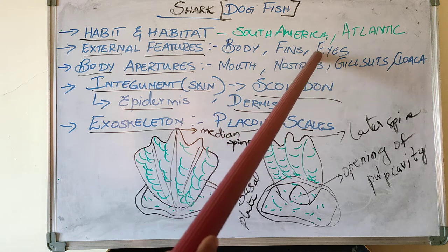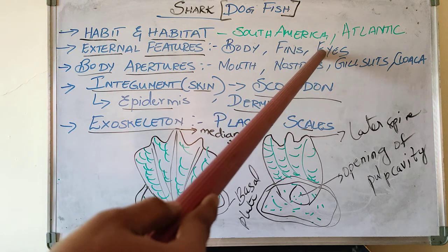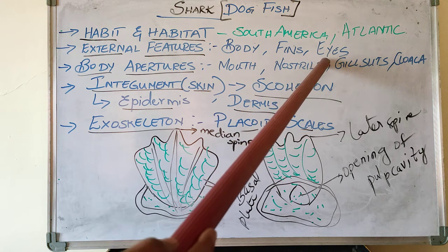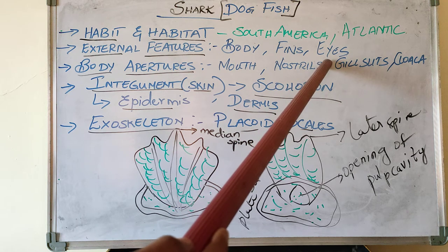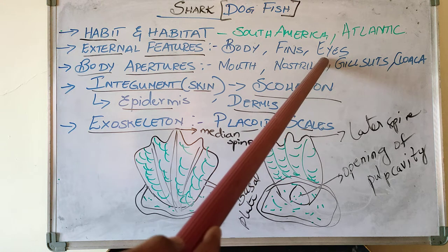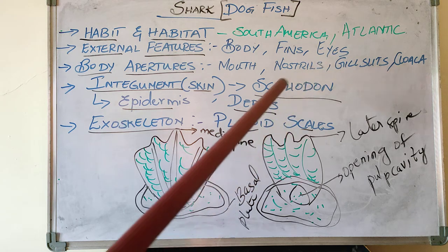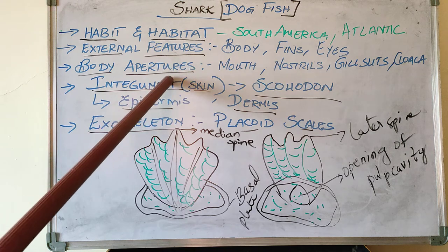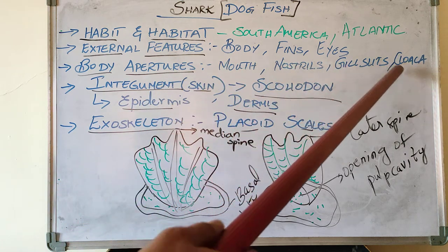Now coming to eyes: a pair of eyes on either side of the head on the lateral side is present for the shark. Eyelids are outgrowths of the skin itself, and there is a thin transparent nictitating membrane present over the eye for protection. Now, if you see the body apertures — the different apertures are: mouth, nostrils, gill slits, and cloacal aperture.